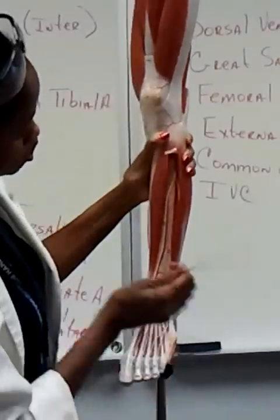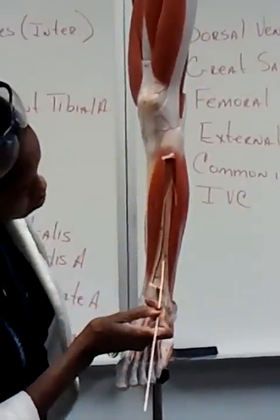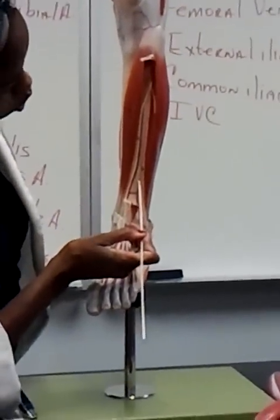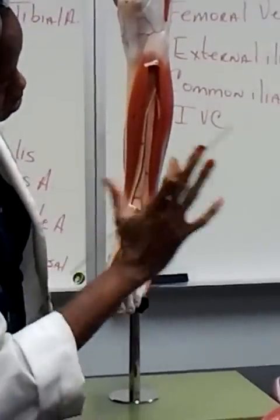So if I take this off, you can see the interosseous membrane right here. It's kind of a grayish-white structure that's holding the fibula and the tibia sturdy.